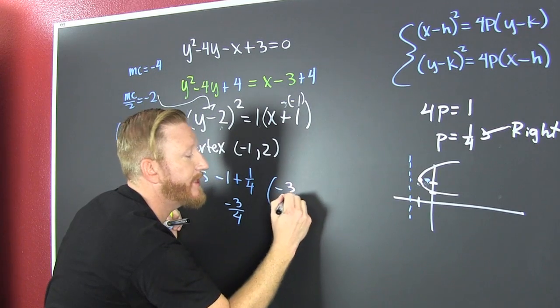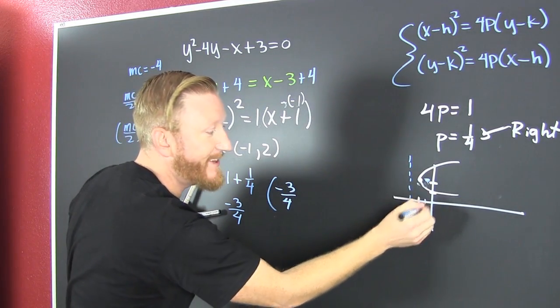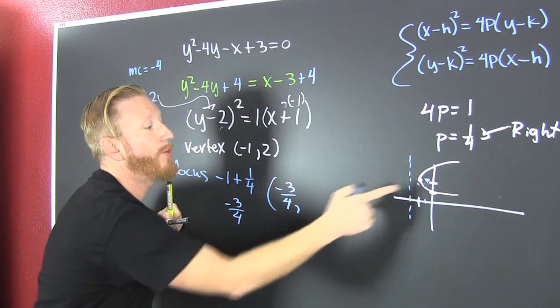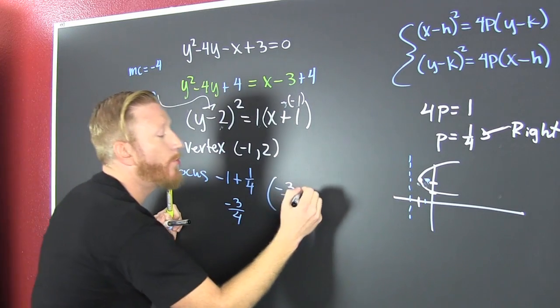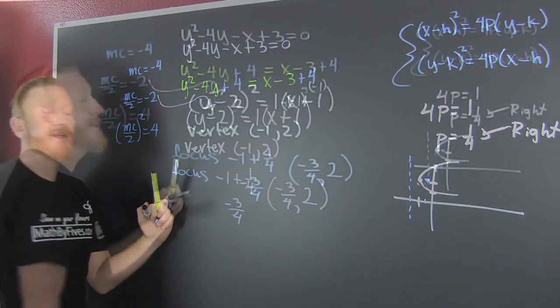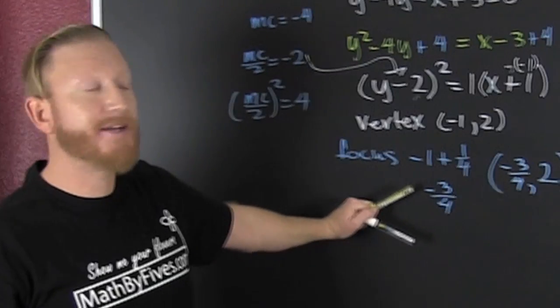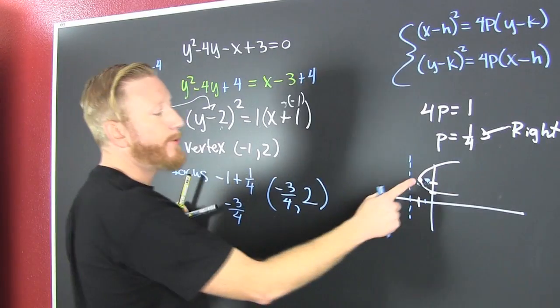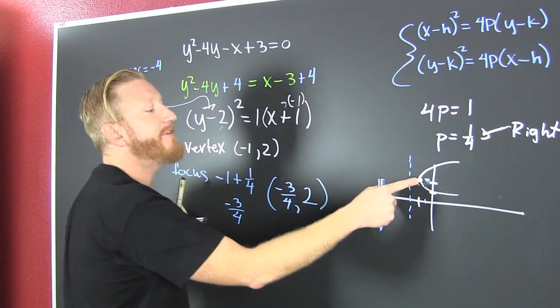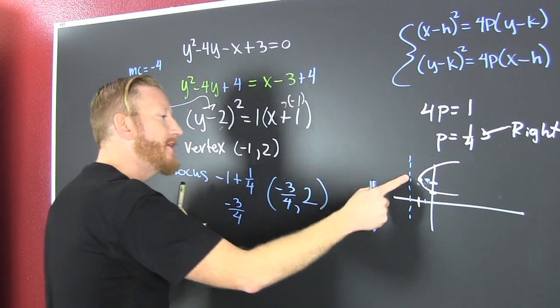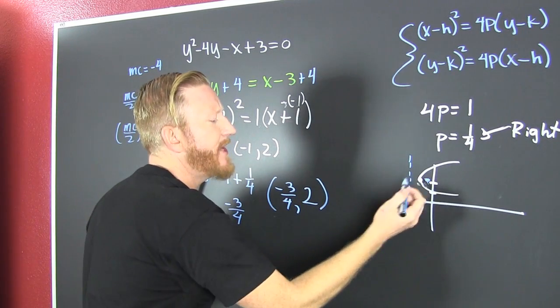So I write minus 3 fourths, and that's right there. And what was my y value? It doesn't change. My y value was a 2. Now I need to go and I need to find my directrix. I see that the directrix is to the left of my vertex. We're trying to find the equation of that line.